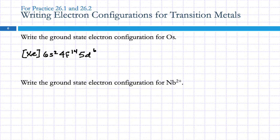Let's look at the ground state electron configuration for Nb2+. Anytime you're writing electron configurations for cations — or anions — write the atom first and then deal with the charge. So first we're going to do just Nb, niobium.